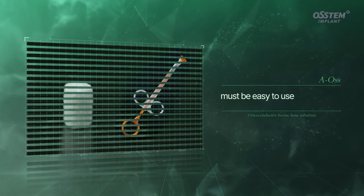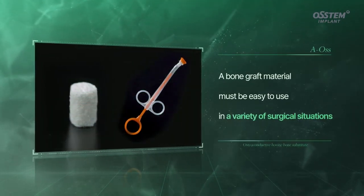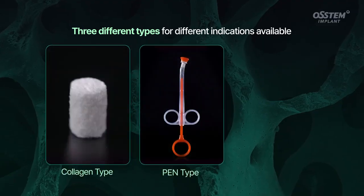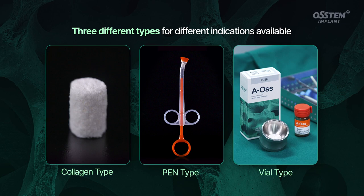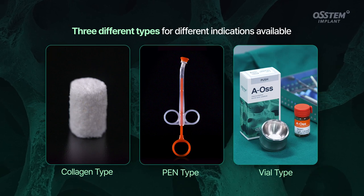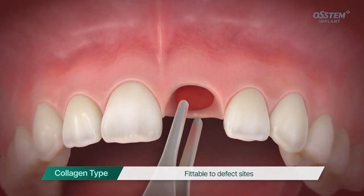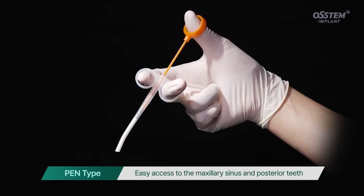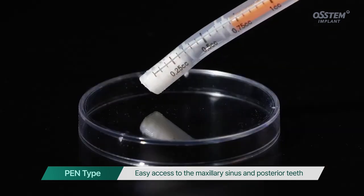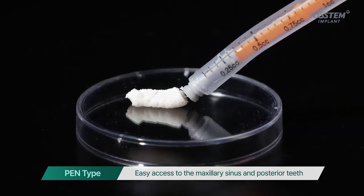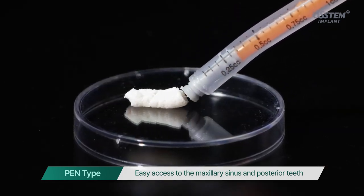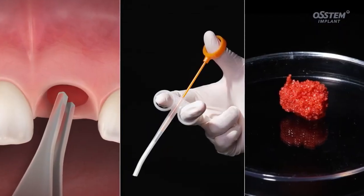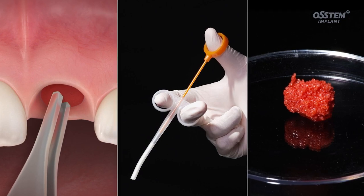The bone graft material must be easy to use in a variety of surgical situations. Three types are available that can be chosen according to the indications. AOS collagen is a fittable type to the defect sites. Pen type allows the surgeon to get access easily to the maxillary sinus and posterior teeth. With vial type, you can control the usage easily according to the defect sites and the cases.